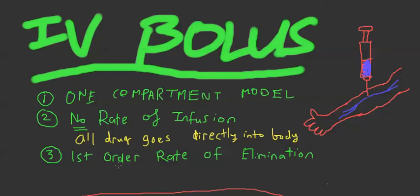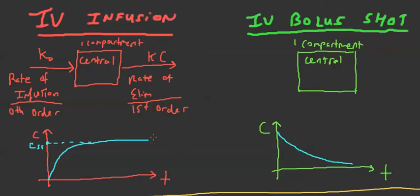The third assumption is that elimination is going to be first order. The best way to explain a bolus shot is to compare it to IV infusion. IV infusion has the one-compartment model — the central compartment only. We have K0, which is the rate of infusion and it's zero order, and we have KC, which is the rate of elimination and that's first order.